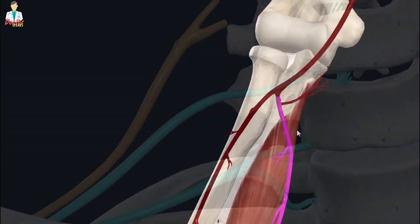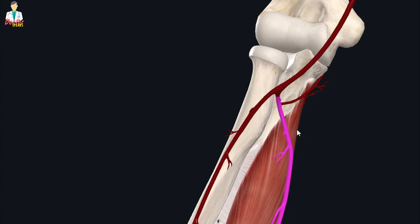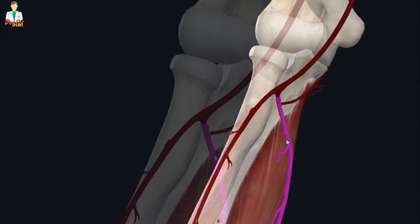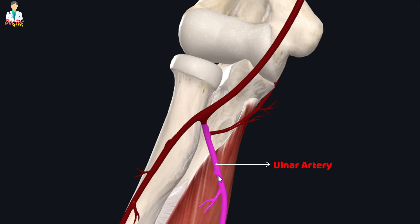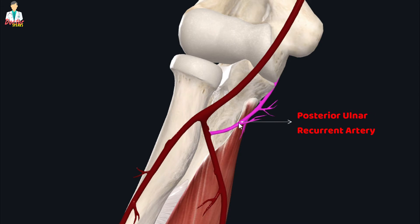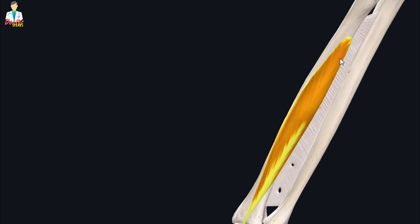Both of these nerves have their nerve fibers from the seventh and eighth cervical and first thoracic spinal nerve roots. The flexor digitorum profundus receives its arterial supply from the ulnar artery, which supplies this muscle by giving off a small branch called the posterior ulnar recurrent artery. The ulnar artery itself originates as a medial division of the brachial artery.